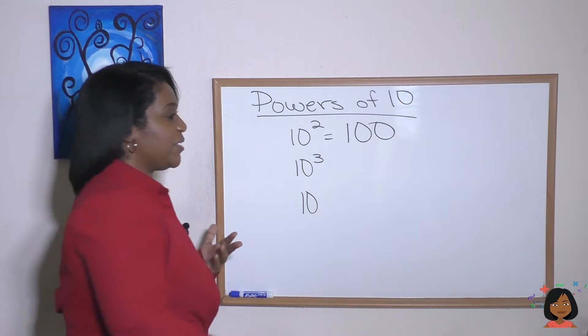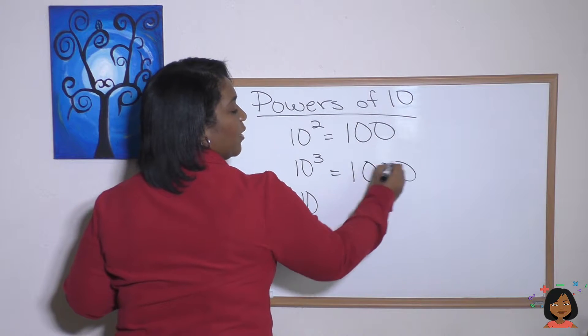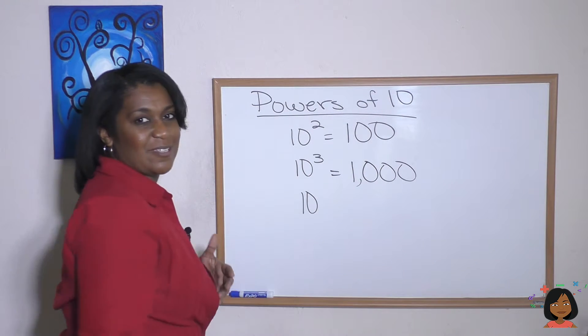So 10 to the third has three zeros. One, three zeros. One, two, three for the number 1,000.